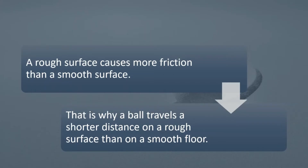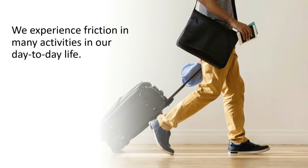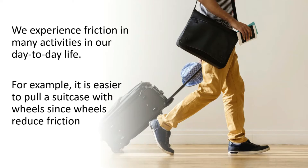A rough surface causes more friction than a smooth surface. That is why a ball travels a shorter distance on a rough surface than on a smooth floor. We experience friction in many activities in our day-to-day life. For example, it is easier to pull a suitcase with wheels since wheels reduce friction. Friction slows down motion, but it also provides the grip necessary for motion.